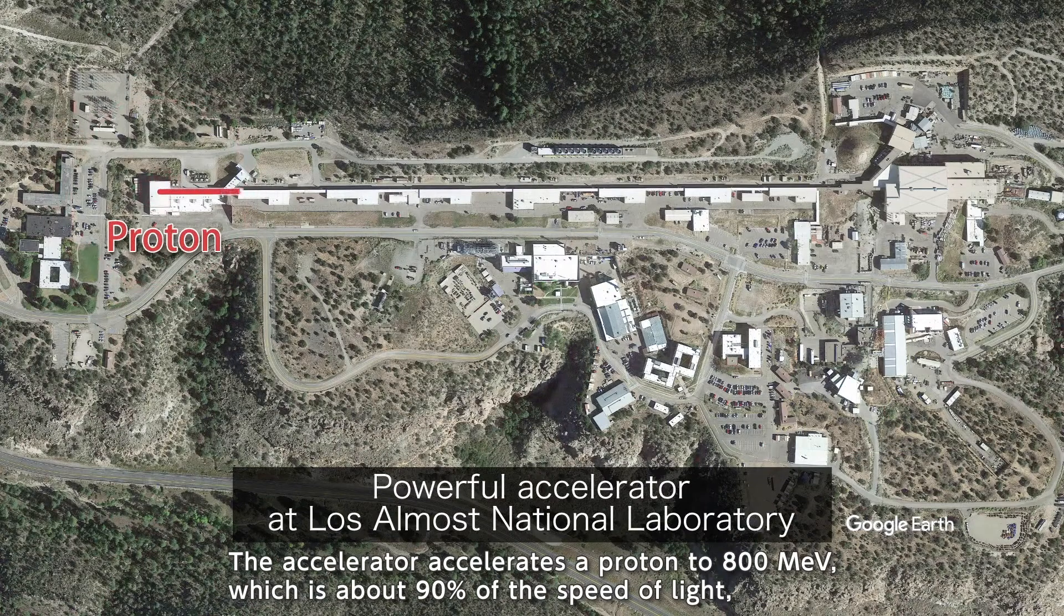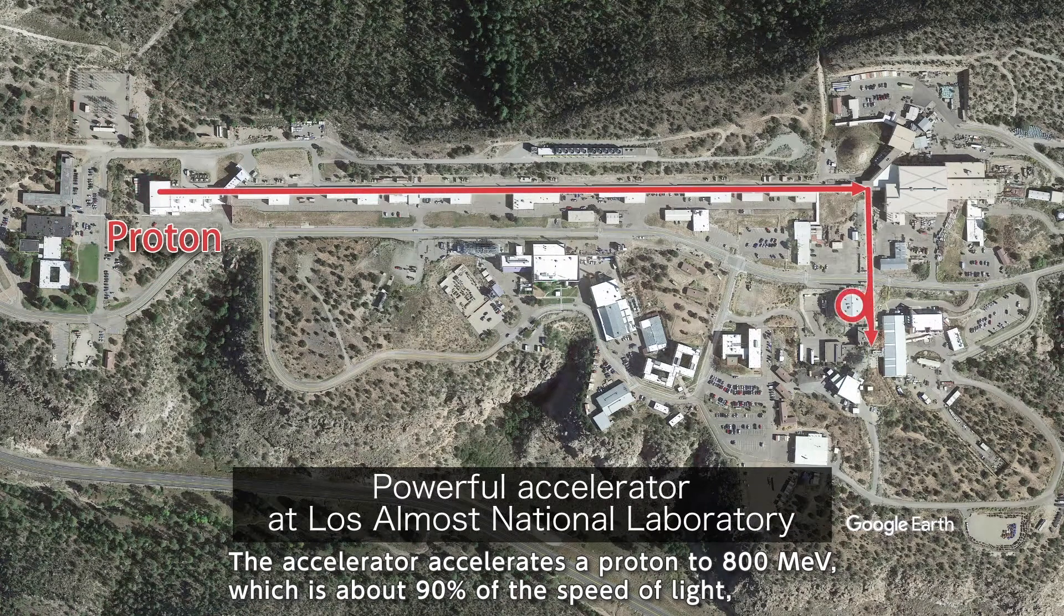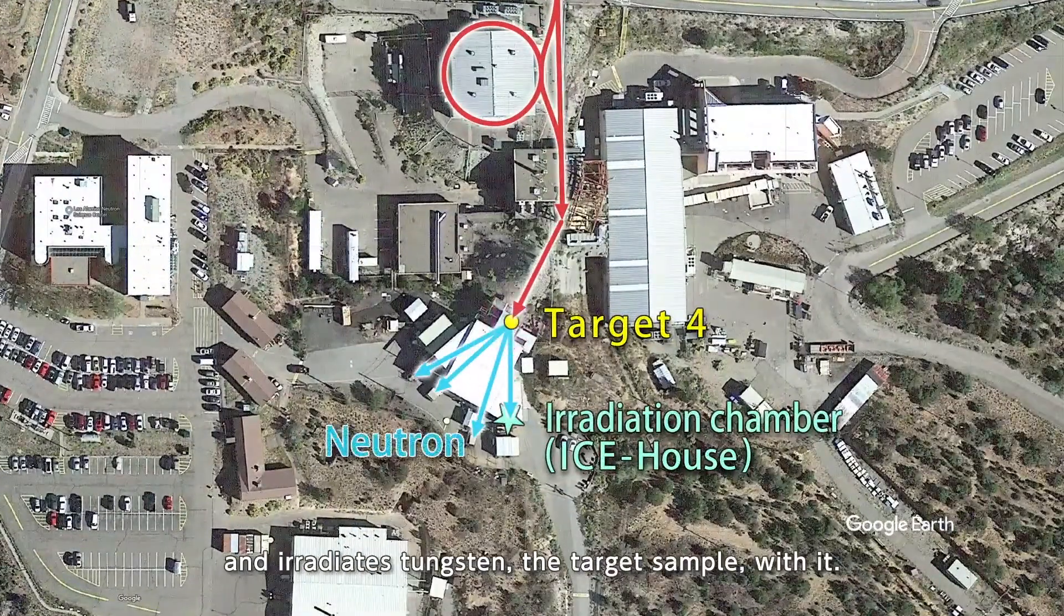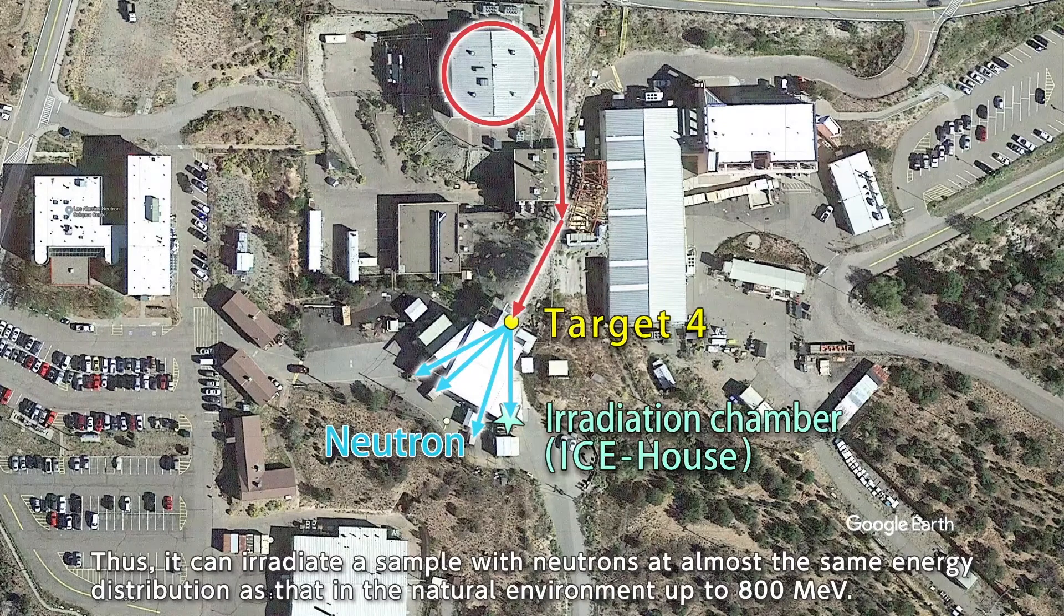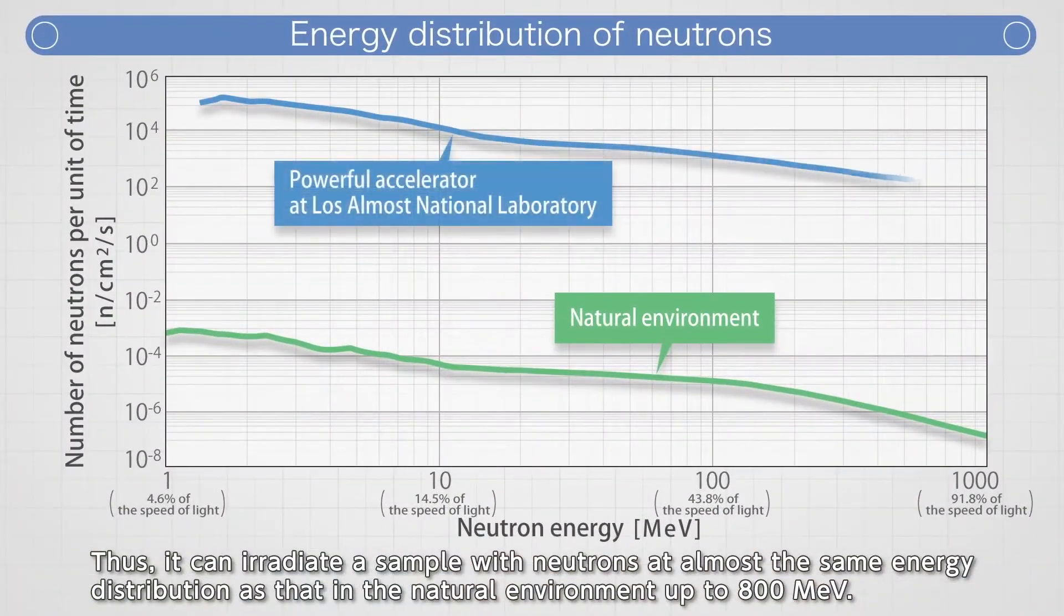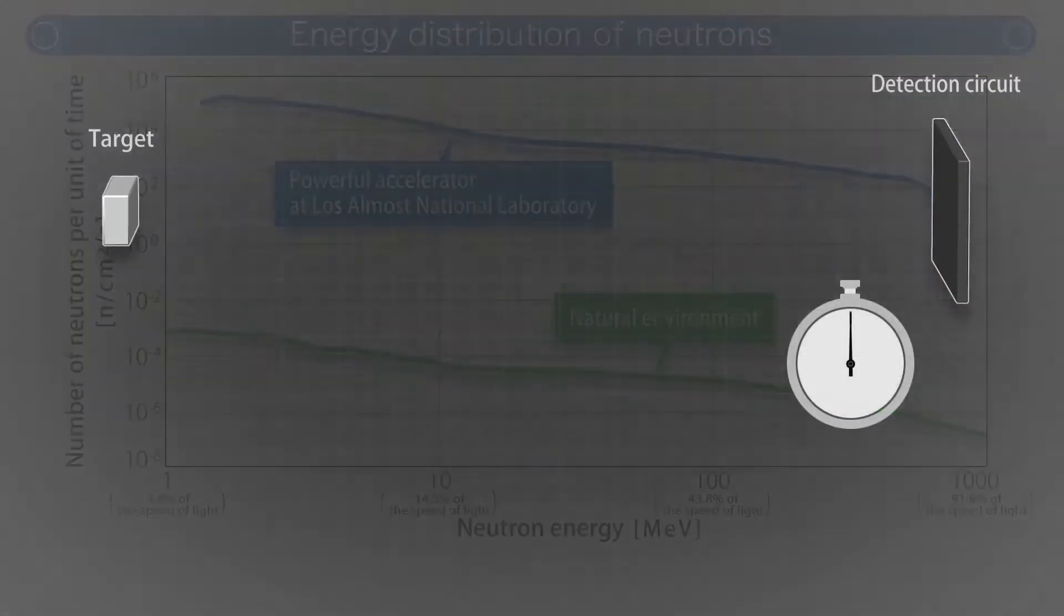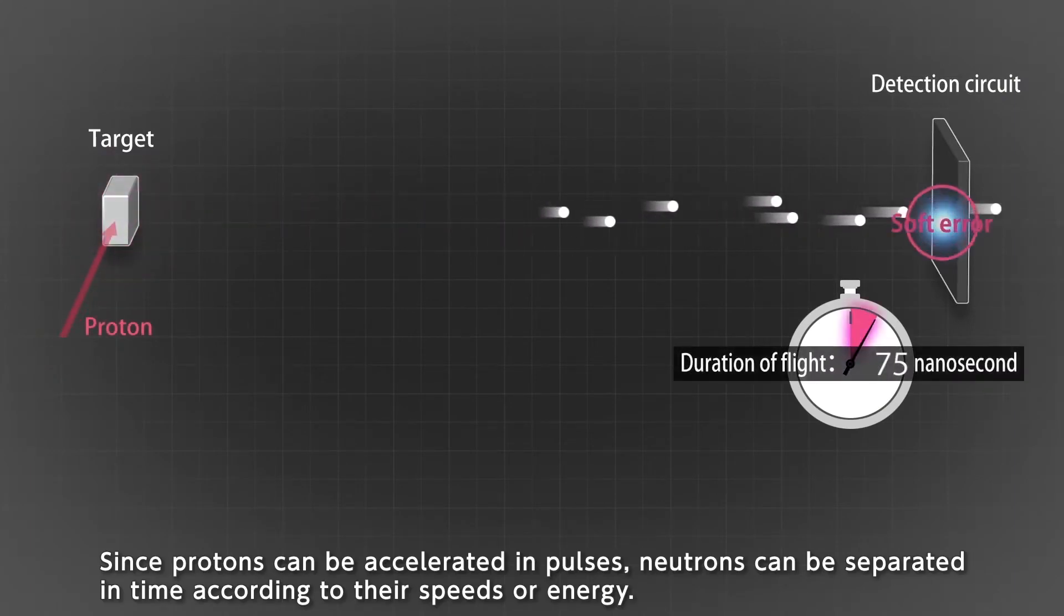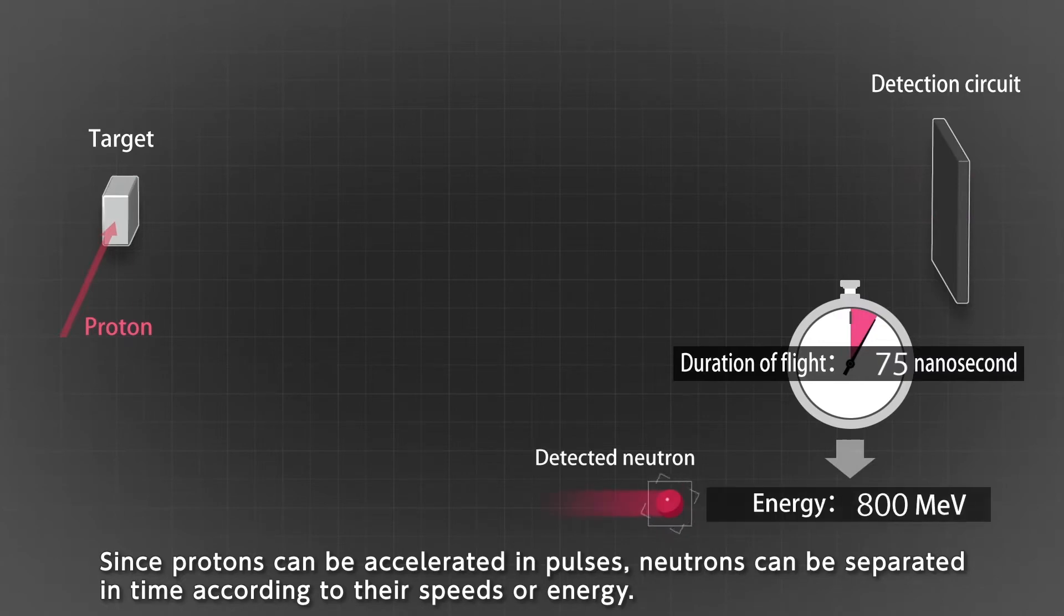The accelerator accelerates a proton to 800 mega-electron volts, which is about 90% of the speed of light, and irradiates tungsten, the target sample, with it. Thus, it can irradiate a sample with neutrons at almost the same energy distribution as that in the natural environment up to 800 mega-electron volts. Since protons can be accelerated in pulses, neutrons can be separated in time according to their speeds or energy.